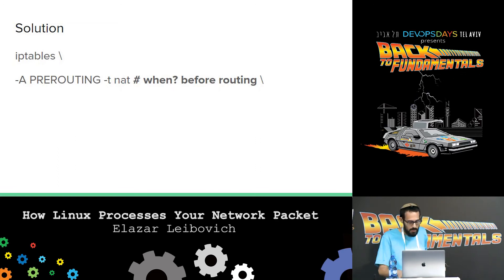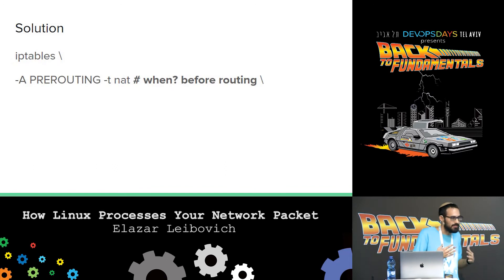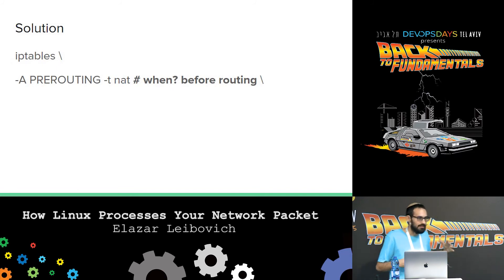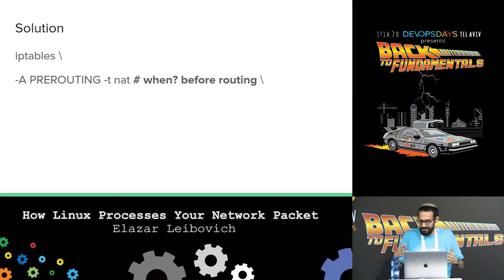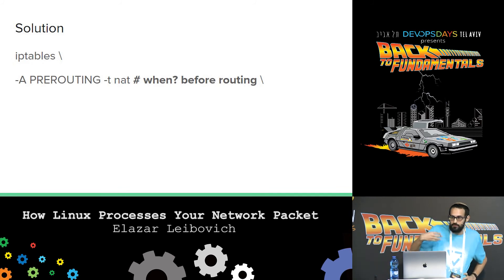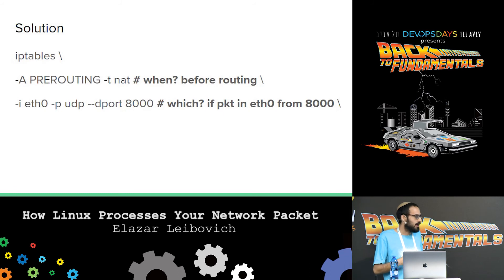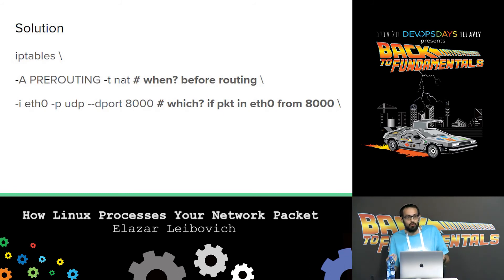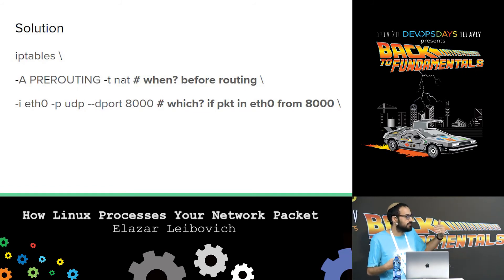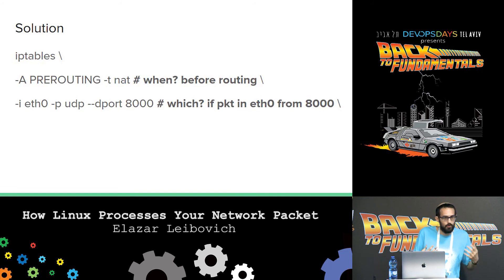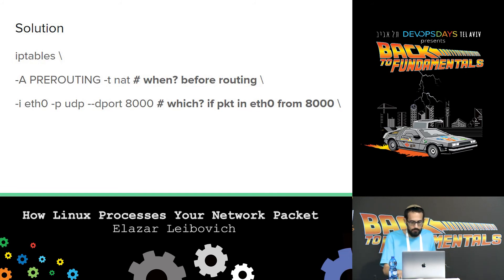Let's look at this command more closely. The first line is, as we said, at what stage do we want to process this packet — and the stage is pre-routing. To decide if this packet is for us or not, we look up the routing table, which contains local routing rules and external routing rules. We want to do that before routing — pre-routing — because after the routing table lookup, after the kernel decides if this packet is for us or not, it's too late. The second line is which packets we want to process — not all packets, only packets received on eth0, with protocol UDP, whose destination port is the port we want to receive data for our application.